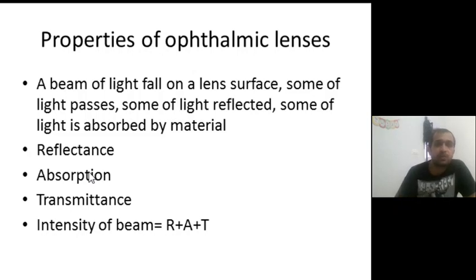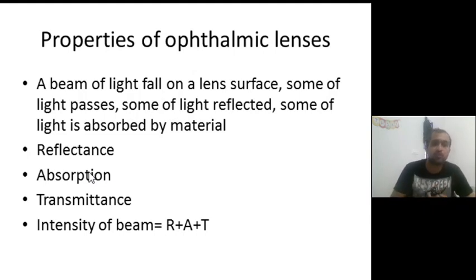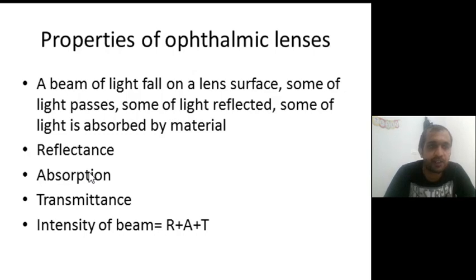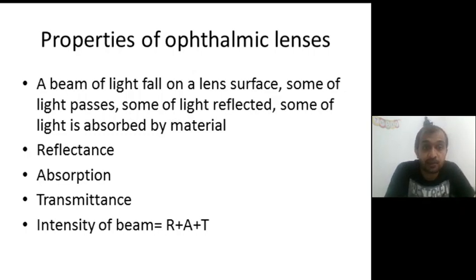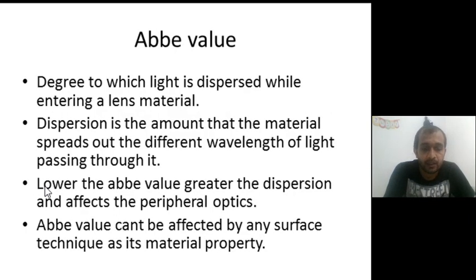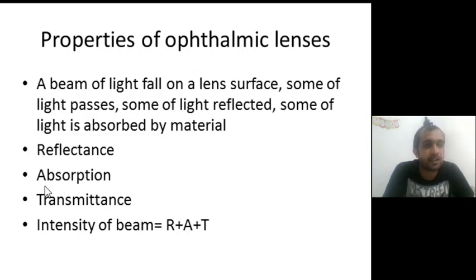Now we will discuss properties of ophthalmic lenses. When a beam of light falls on a lens surface, some light passes through, some light is reflected, and some light is absorbed by the material. The features we will discuss are: what allows rays to pass through a material (transmittance), what causes rays to be reflected, and what causes rays to be absorbed. These properties are reflectance, absorption, transmittance, and intensity of a beam.